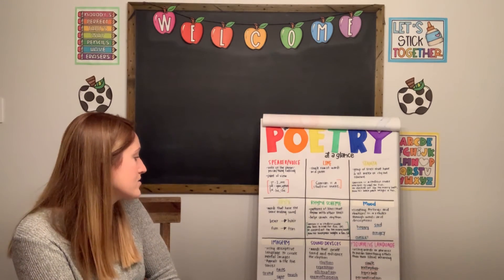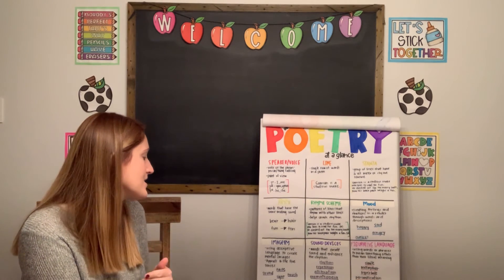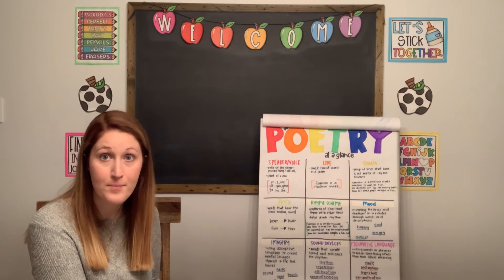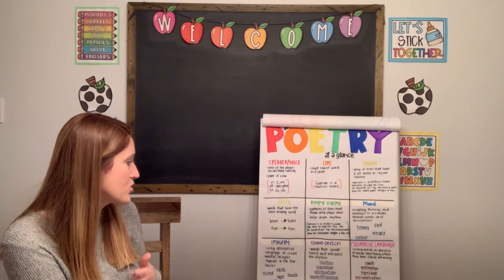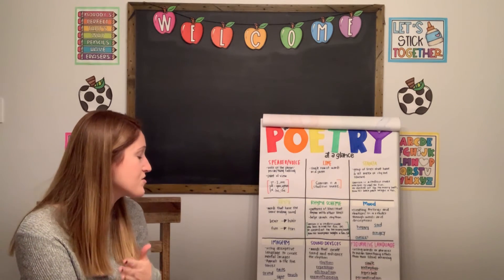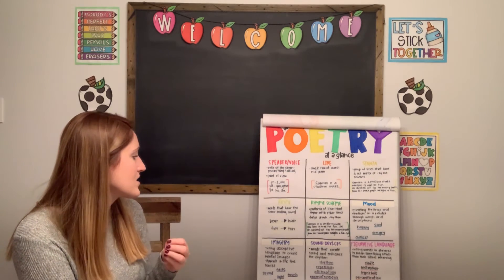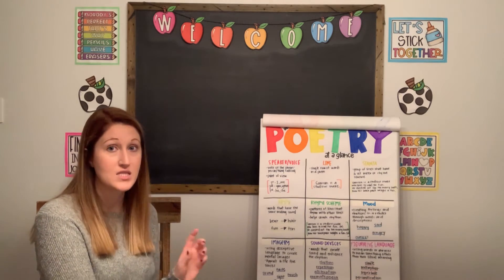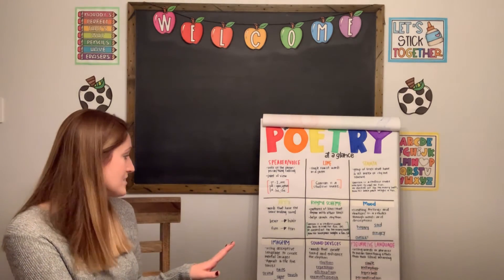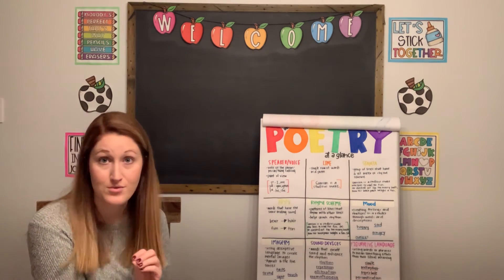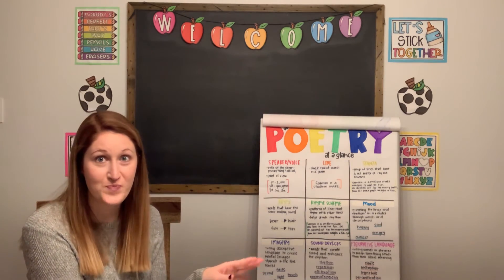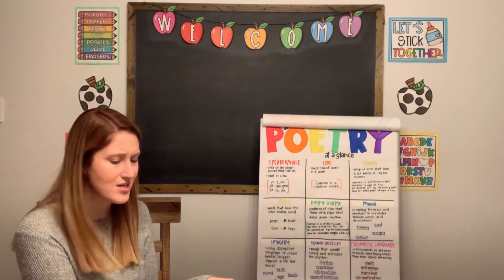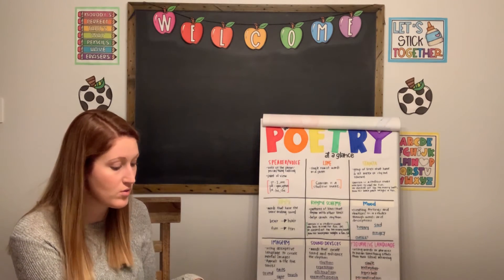Authors also use sound devices — words that create sound and enhance the rhythm — including rhythm, repetition, alliteration, and onomatopoeia. They also use figurative language, which is when we use words or phrases to mean something other than their literal meaning — things like similes, metaphors, hyperboles, and personification. Tomorrow we're going to dive deep into those because there are so many pieces when it comes to figurative language and sound devices. Now let's look at one more poem and see if we can find a lot of these elements of poetry in it.